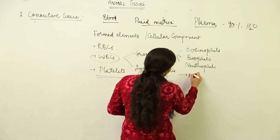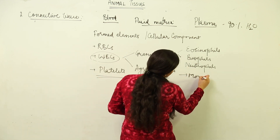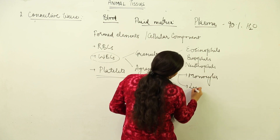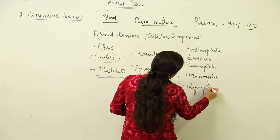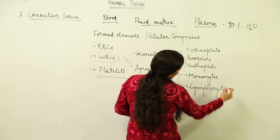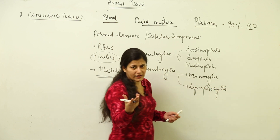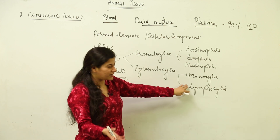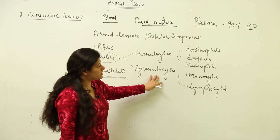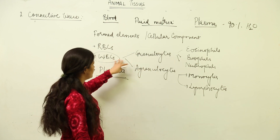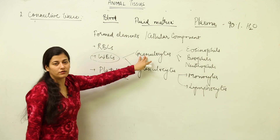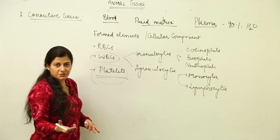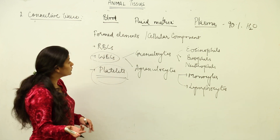In agranulocytes, we have lymphocytes and monocytes. Lymphocytes pass from the blood into the lymph and form the immunity part of our body. So WBCs can be granulocytes or agranulocytes, and platelets are those cells responsible for blood clot formation.